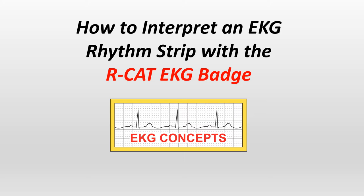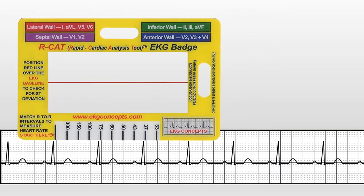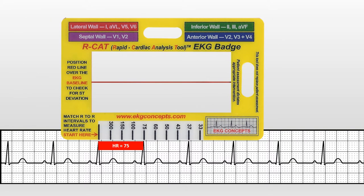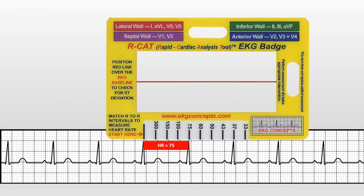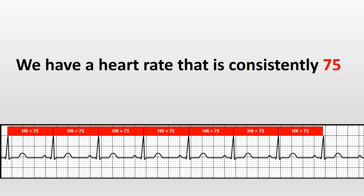How to interpret an EKG rhythm strip with the RCAT EKG badge. First, match the R-to-R intervals to measure the heart rate. We have a heart rate that's consistently 75.